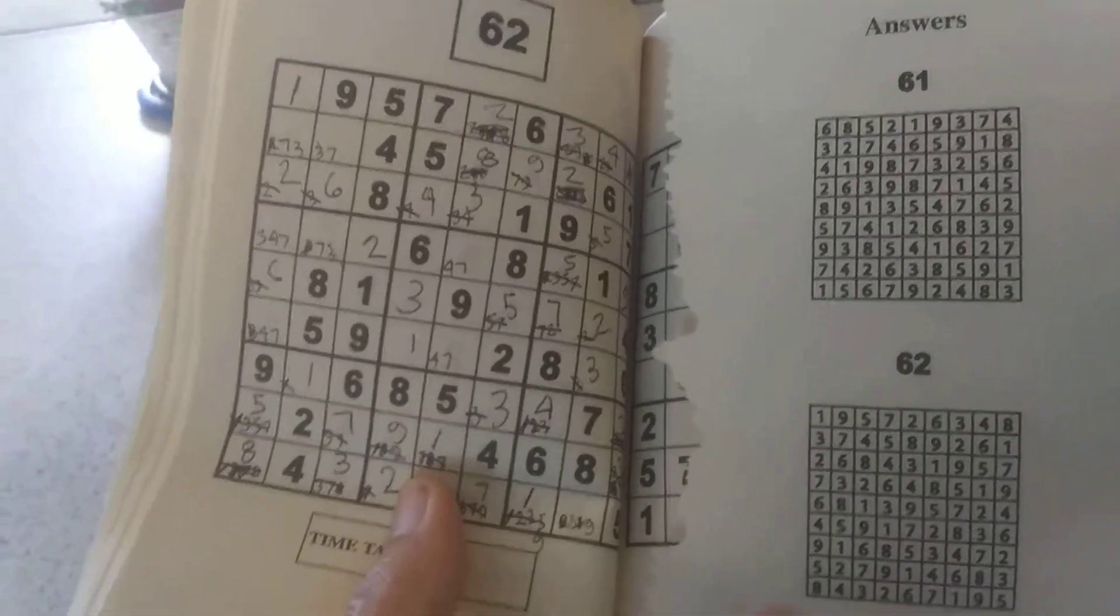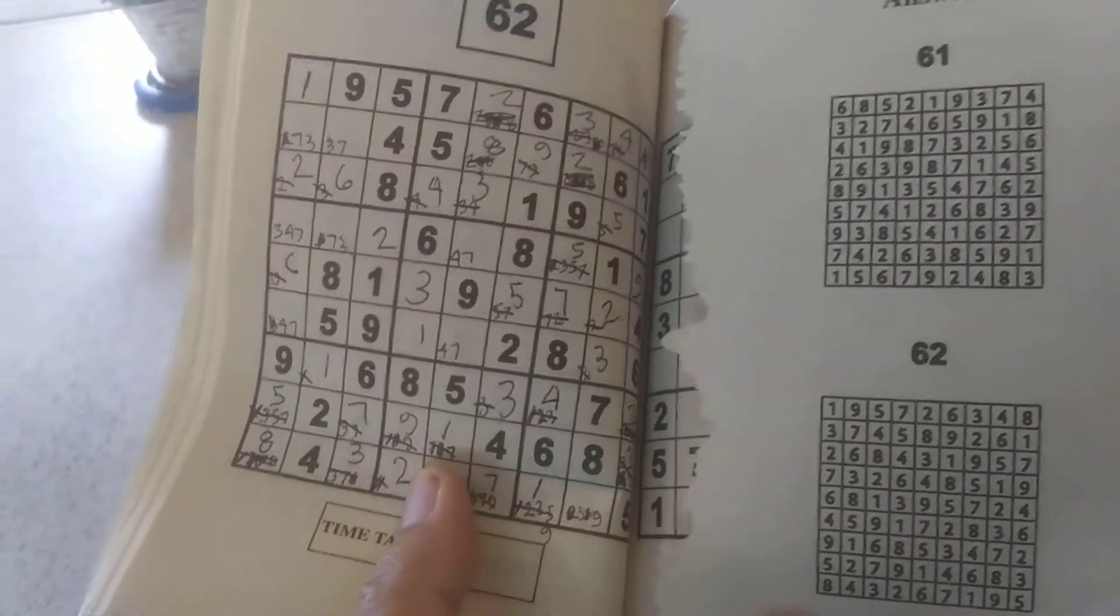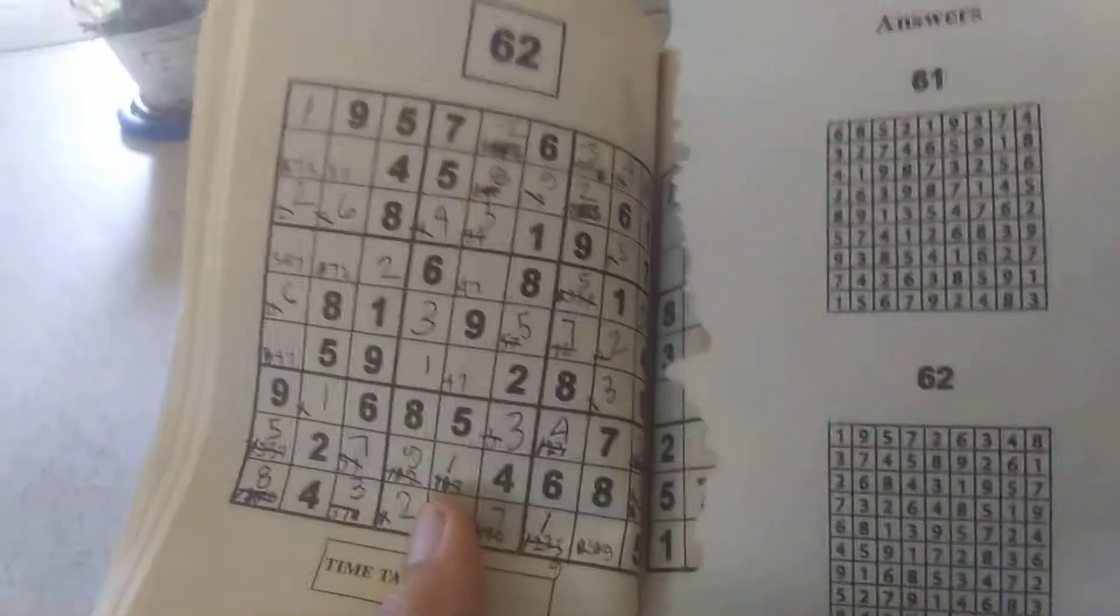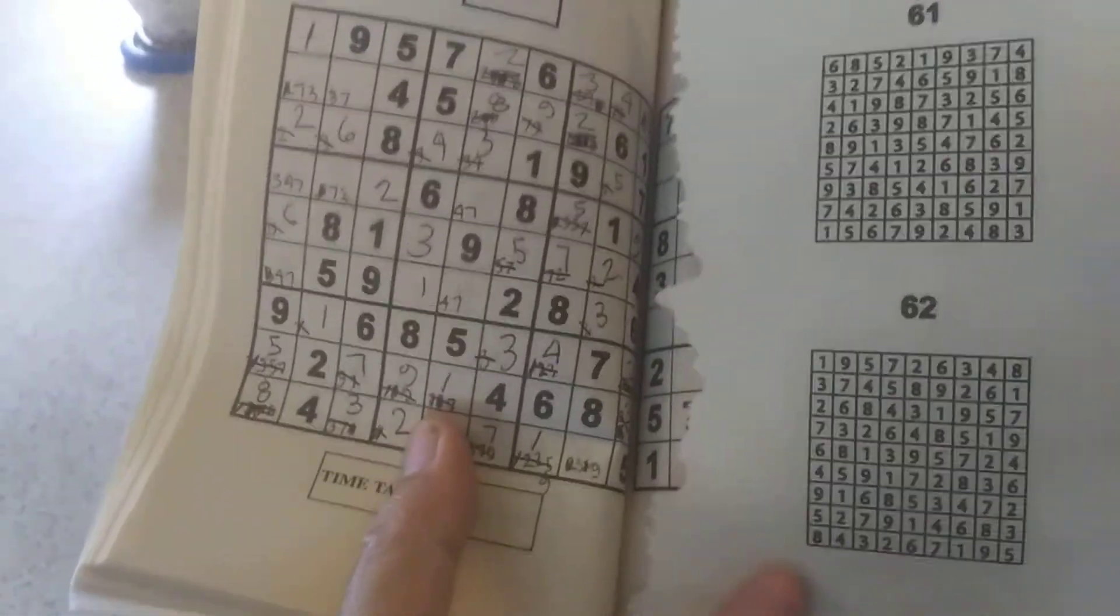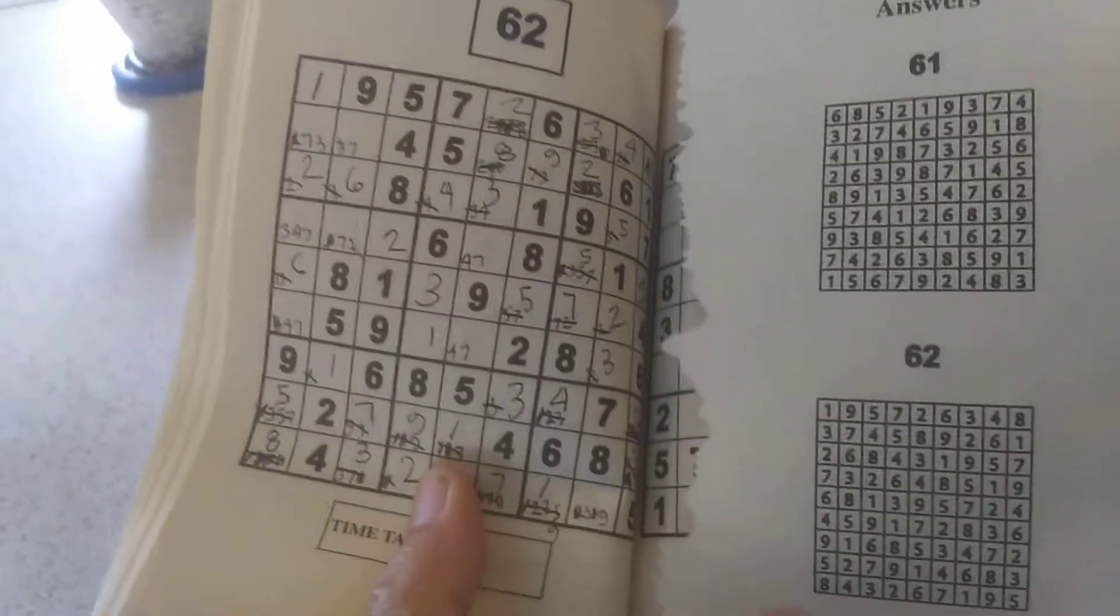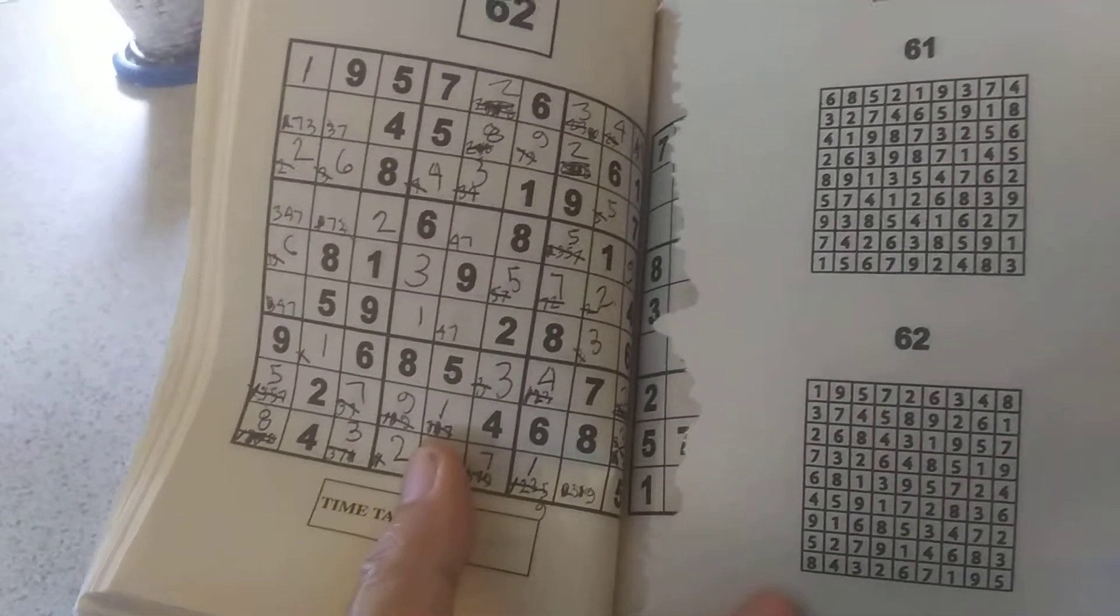This is my method of cheating on Sudoku. I always pronounce it one or the other, back and forth. Two methods I use for cheating.